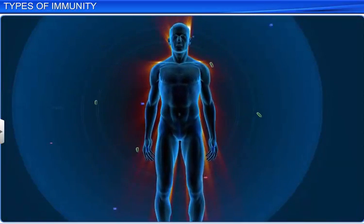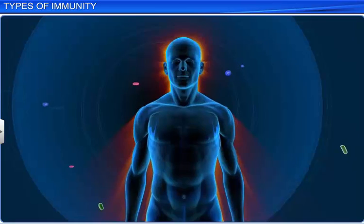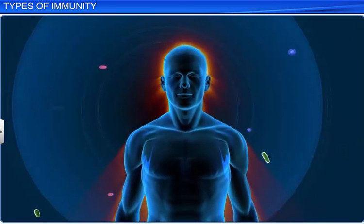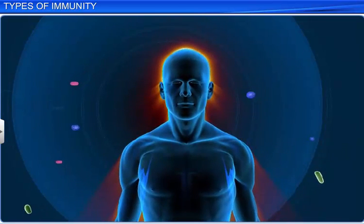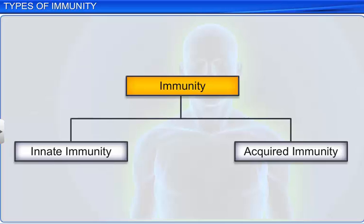Immunity is the overall ability of a host to fight the disease-causing organisms. Immunity is of two types: innate and acquired.